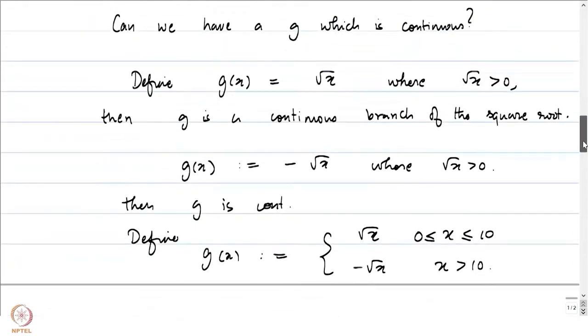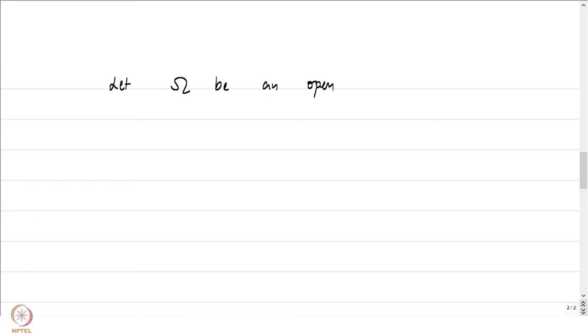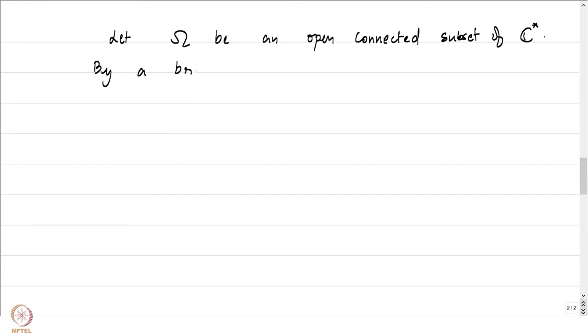Our goal is to do something similar with our logarithm. By a branch of the logarithm on an open connected subset ω of ℂ* (all domains ω considered will be open connected), we mean a function f from ω to ℂ such that exp(f(z)) = z for all z in ω. The domain ω plays a big role. Basically, for every z we are picking one point from the set log(z) defined earlier.